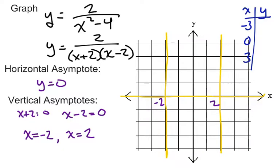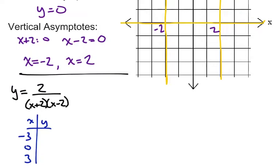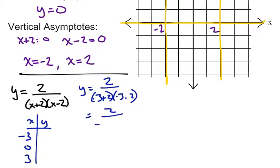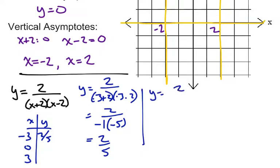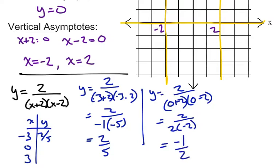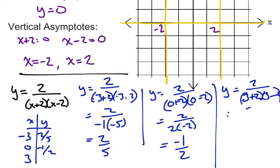Let's scroll down and show our work. Plug in negative 3: (negative 3 plus 2)(negative 3 minus 2) gives us 2 over negative 1 times negative 5, which is 2 fifths. Then plug in 0: y equals 2 over (0 plus 2)(0 minus 2), which gives us 2 over negative 4, which is negative 1 half. And plug in 3: y equals 2 over (3 plus 2)(3 minus 2), which gives us 2 over 5 times 1, which is 2 fifths again.